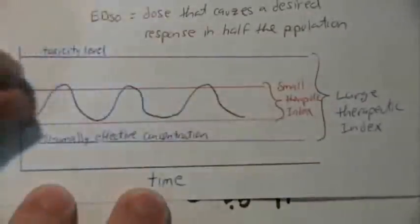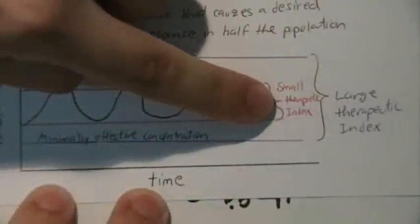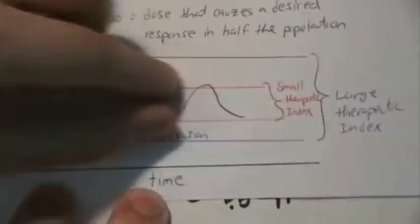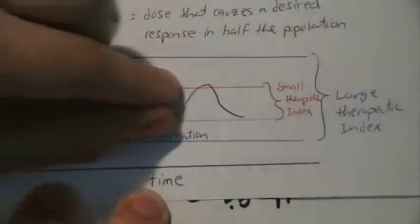So switching a drug with a small therapeutic index between brand and generic is kind of risky because the new concentration might be outside the narrow range of desirable concentrations.